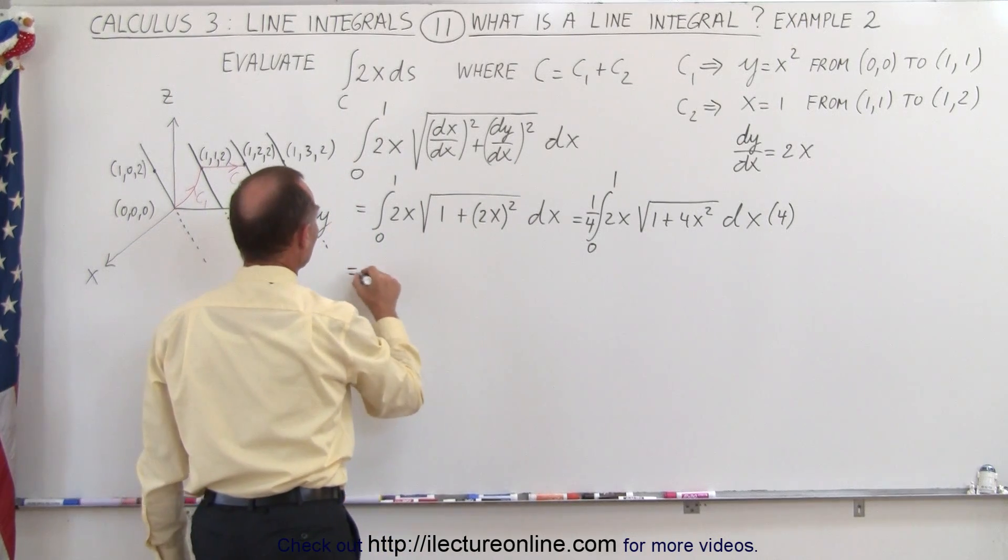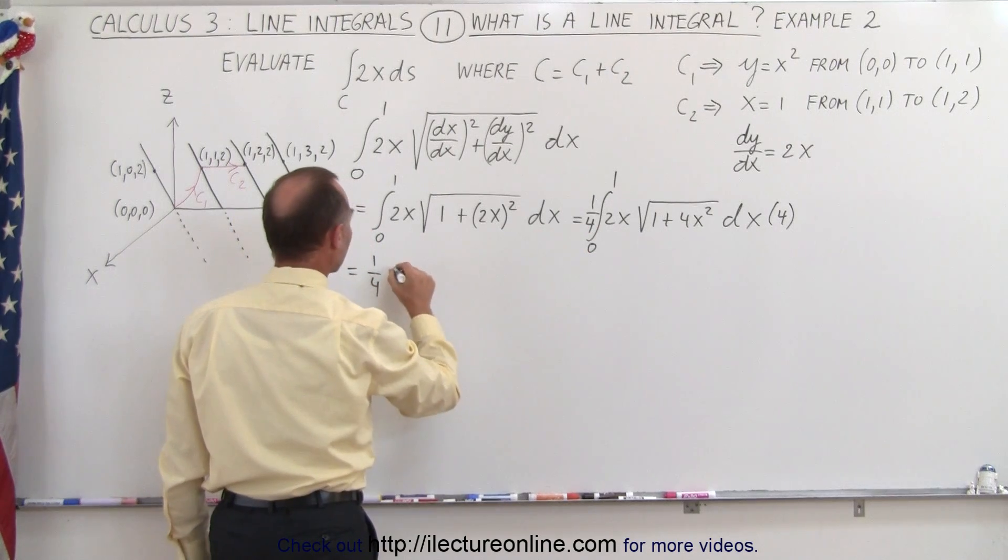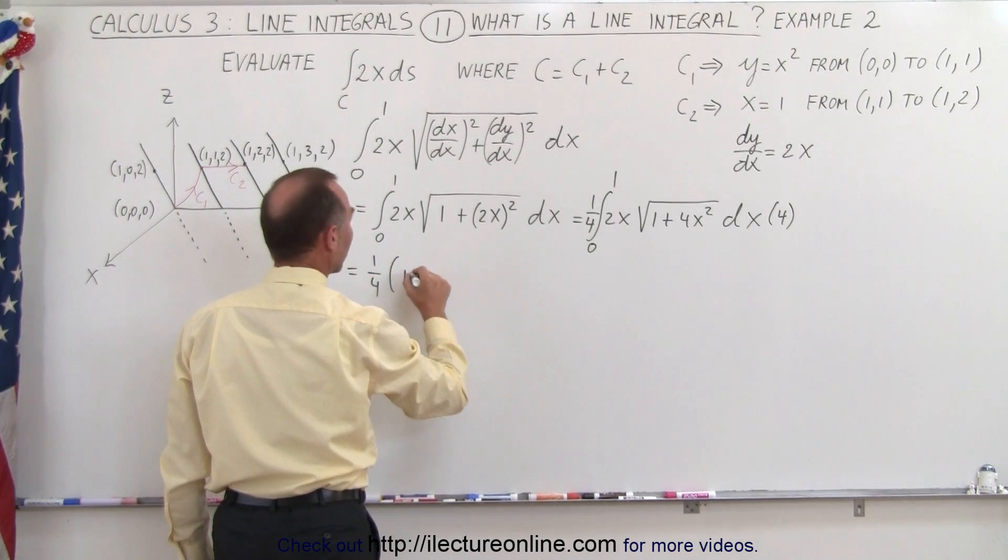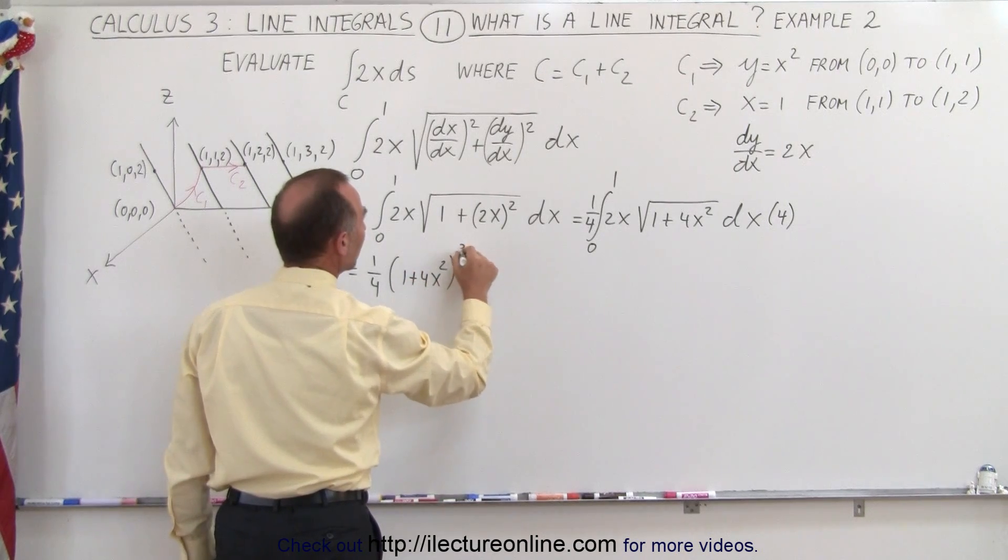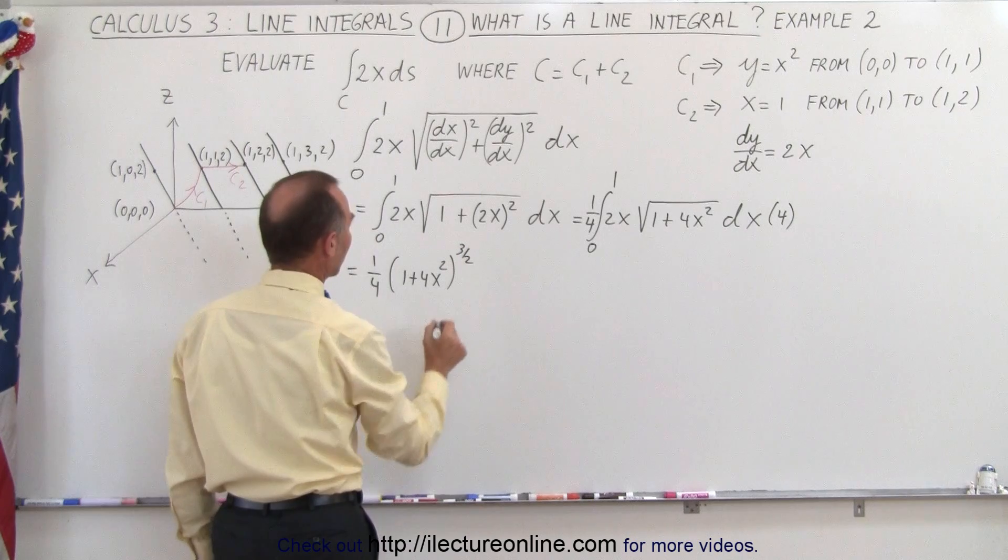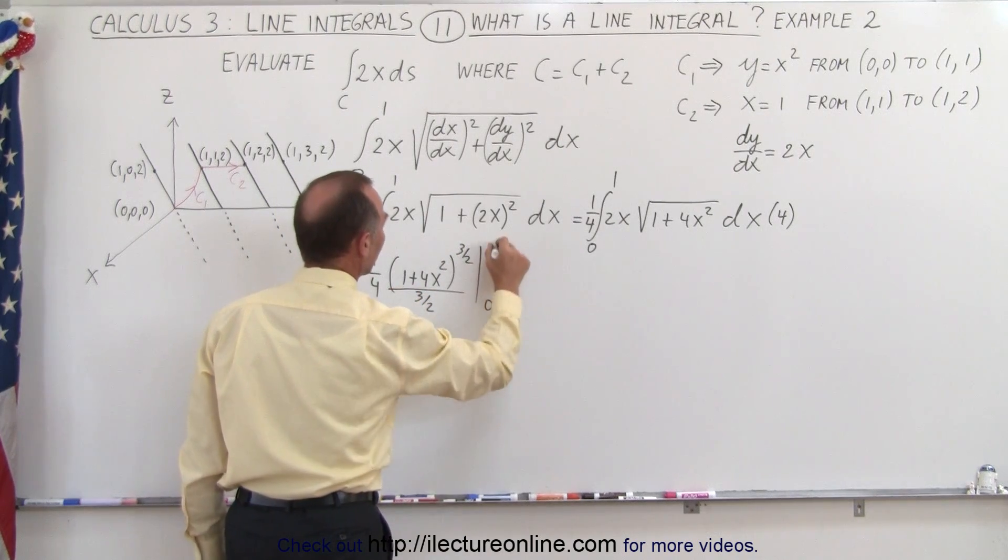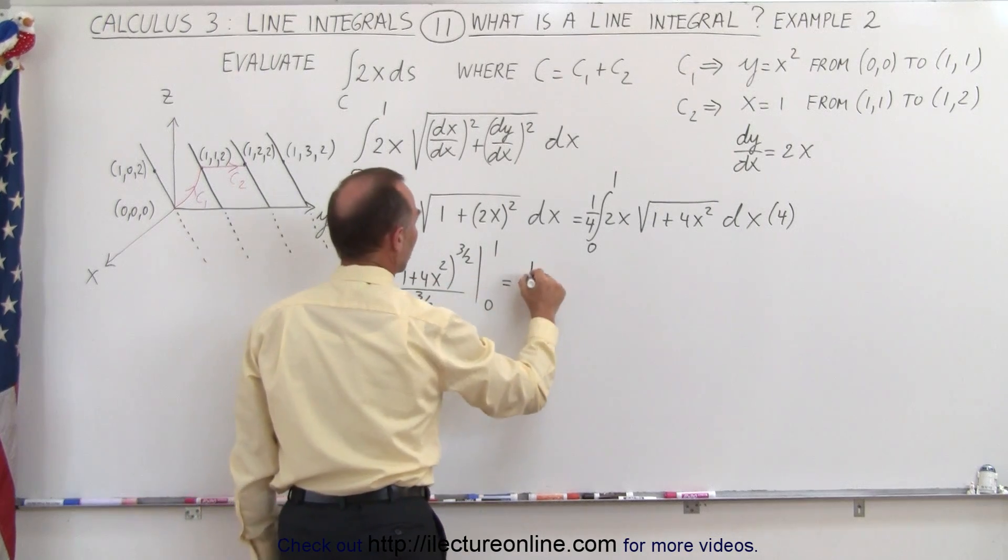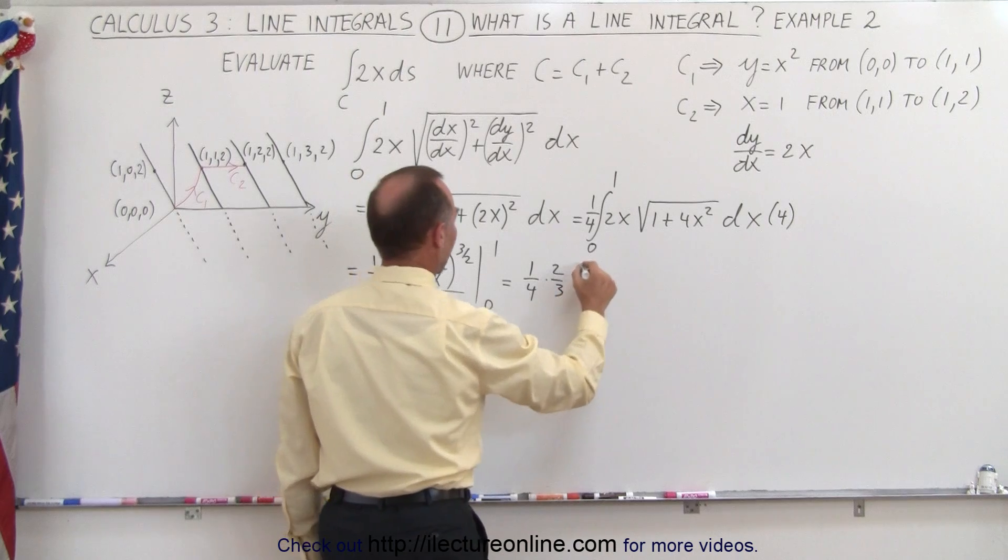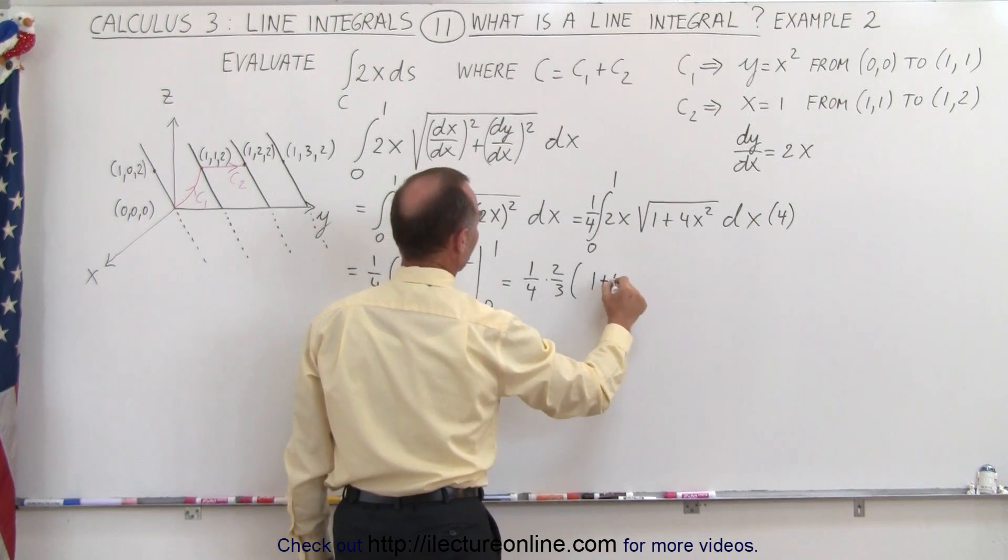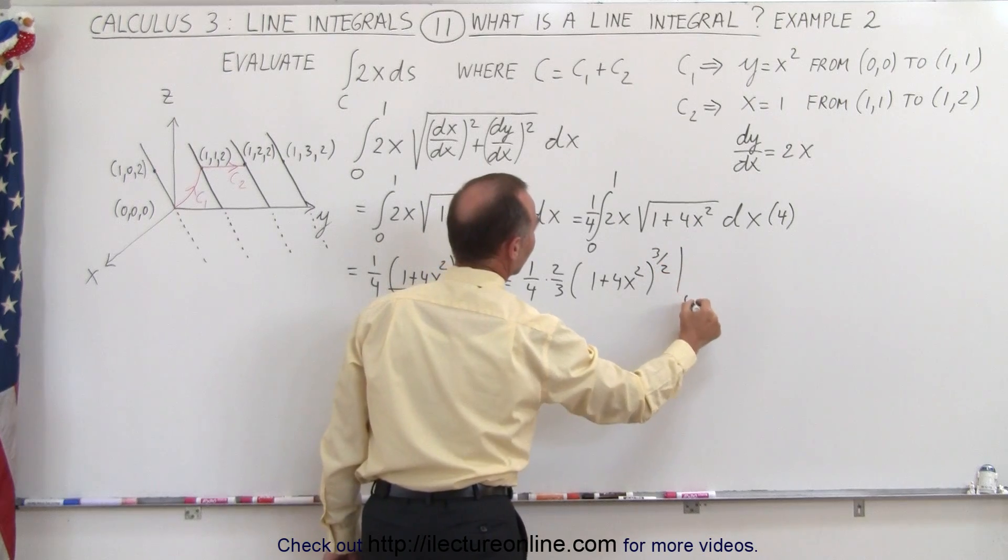So this becomes equal to 1/4 times the quantity here, which is (1 + 4x²)^(3/2), instead of 1/2 power, divided by 3/2, evaluated from 0 to 1, which is equal to 1/4 times 2/3, times the quantity (1 + 4x²)^(3/2), evaluated from 0 to 1.